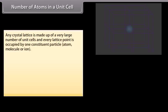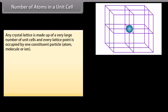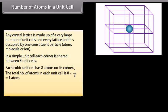Any crystal lattice is made up of a very large number of unit cells and every lattice point is occupied by one constituent particle — atom, molecule, or ion. In a simple unit cell, each corner is shared between 8 unit cells. Each cubic unit cell has 8 atoms on its corners, so the total number of atoms per unit cell is 8 × (1/8) = 1 atom.